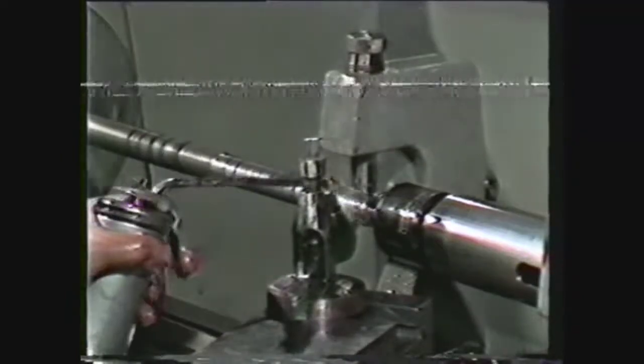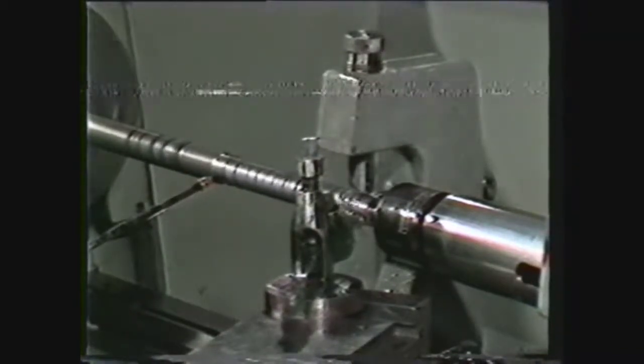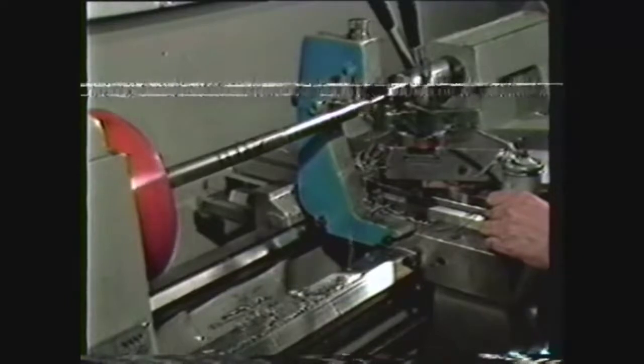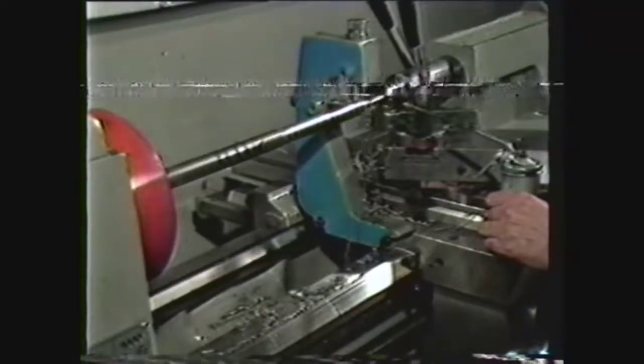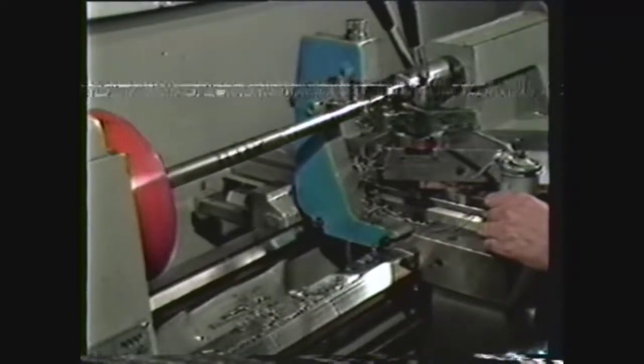The follower rest can be used on long or slender shafts that may be sprung out of alignment under cutting pressure. A follower rest mounts on the carriage of the lathe and moves with the tool, backing up the work opposite the point of the tool.